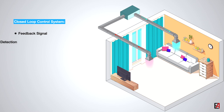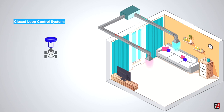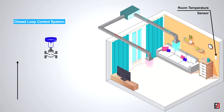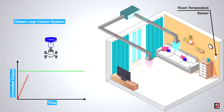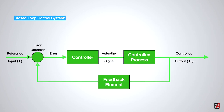A control system with one or more feedback paths is called the closed loop control system or feedback control system. Using the same example of maintaining room temperature, a room temperature sensor is provided as feedback to the controller to calculate the error between the desired temperature and the actual room temperature. Now the controller can decide how much the chilled water control valve needs to be opened to maintain the desired room temperature, and will actuate the control valve to eliminate the error. As the controller gets real-time feedback of the room temperature, accurate and stable control can be achieved.